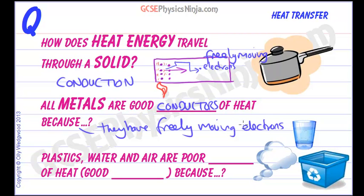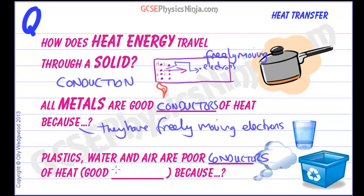Sometimes you get this — you're taught that it's a sea of delocalised electrons, which sounds all very fancy. But just describe it as a lot of freely moving electrons — that's absolutely fine. Now plastics, water and air are poor conductors of heat, and they are good insulators.